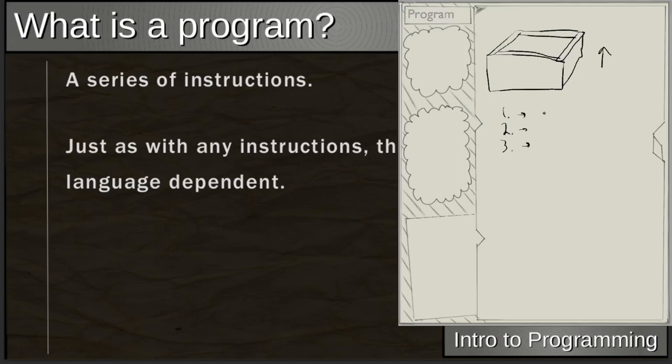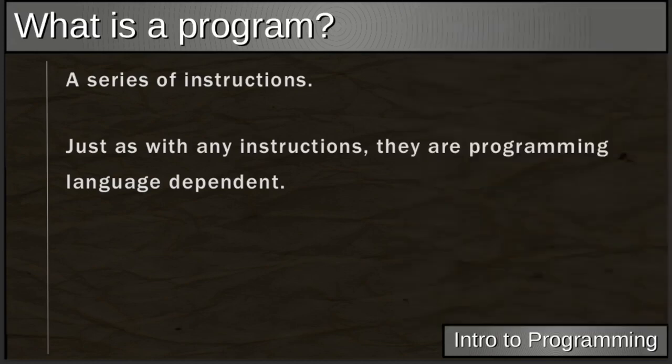You give specific, exact instructions. If somebody hasn't built a house before, you have to tell them exactly what to do — an order of operations: first foundation, second framing, and so on. A program works the same way; it doesn't have any human context, so you give it a series of instructions. And just as you'd give instructions in French to someone who only speaks French, similarly there are programming languages that vary.